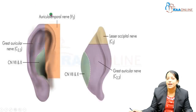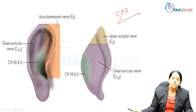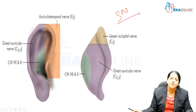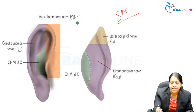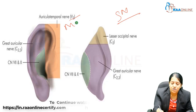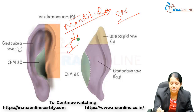Coming to the nerve supply — this can come as a short note. The sensory supply of the pinna: it has an anterior aspect, a posterior aspect, and an aspect around the external auditory meatus. The anterior aspect of the concha is supplied by the auriculotemporal nerve. The auriculotemporal nerve is a branch from the mandibular nerve, which comes from the fifth cranial nerve — the trigeminal nerve.